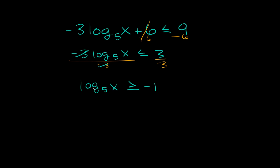3 divided by negative 3 is negative 1. We're still trying to isolate x, so in order to get rid of this log base 5 we write a big 5 on both sides. The 5 and the log base 5 cancel out, leaving x is greater than or equal to 5 raised to the negative first power, which equals 1/5. Our final answer is x is greater than or equal to 1/5, and since our answer is already greater than zero, we're in the clear.